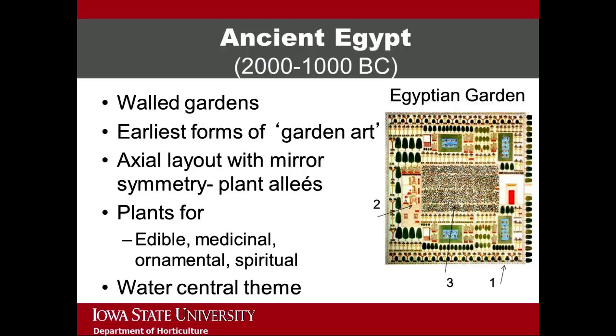Plants were selected to serve specific purposes, including to provide a food source, to be used for medicinal needs, to be ornamental, or because they related to the spirituality of the time. Because of the hot, dry climate, water often played a central theme in Egyptian gardens and was used in canals, basins, or as part of sacred water motifs. The image on the right is an ancient line drawing of an Egyptian garden. The garden includes a square of land surrounded by walls and plants, a dwelling house shaded by trees and near water elements, and the vineyard in the middle. All the trees are grouped into rows throughout the design.